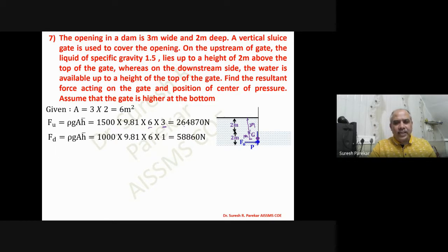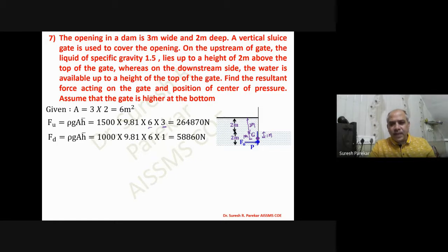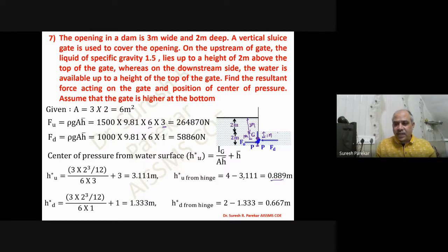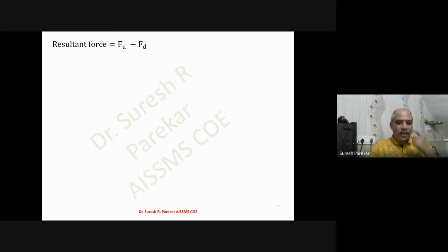For the downstream side, h̄ = 1 meter from the free liquid surface, and F_downstream = 58.86 kilo Newtons. The center of pressure for upstream: h*_upstream = b·d³/12 / (A·h̄) + h̄ = 3.111 meters from the free liquid surface, which is 0.889 meters from the hinge. For downstream: h*_downstream = 1.333 meters from the free liquid surface, which is 0.667 meters from the hinge.